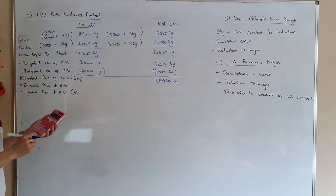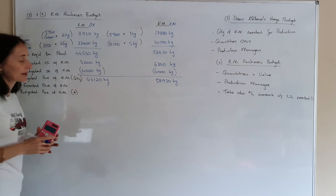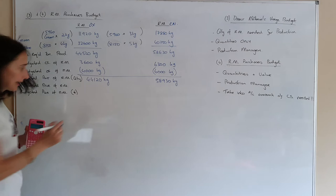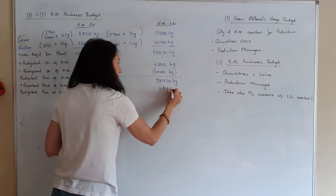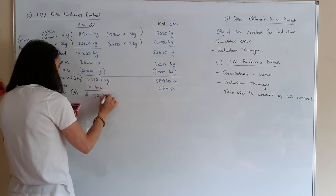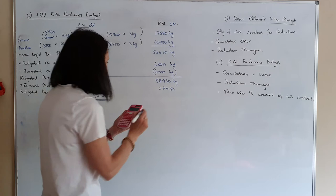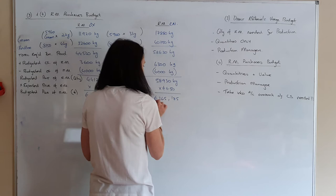That's how many kilograms you need for each raw material. The purchase price of the raw materials is expected to be €3 per kilogram for material OX and €4.50 per kilogram for material EN. So that's how much it will cost you to buy your raw materials — that's the cost for material one and the cost for material two.